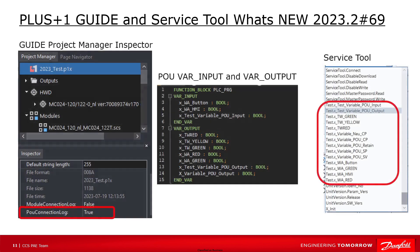Another possibility to define diagnostic data in a POU is called POU connection log. If you open the project manager inspector you will find the parameter POU connection log. If this parameter is set to true, all parameters in POU interface sections var input and var output will be included as checkpoints in the diagnostic data.